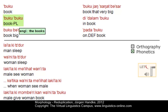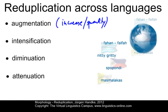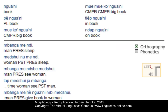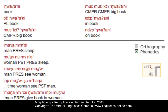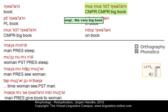The next category is intensification — the increase of degree. The most well-known example here is adjectival gradation. In Medumba, a Niger-Congo language spoken in Cameroon, 'the big book' is 'mue kok nguani', and 'the very big book' is clearly an example of reduplication.